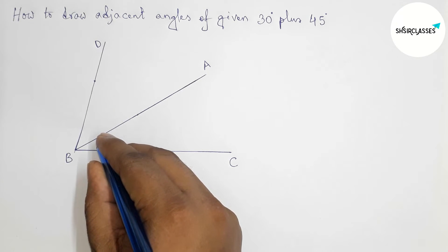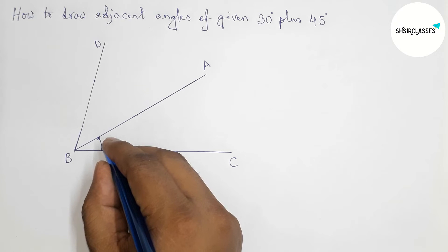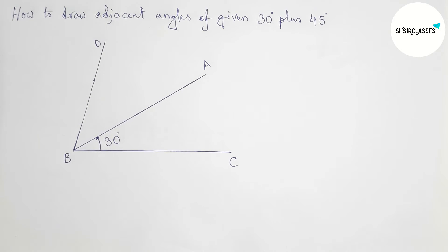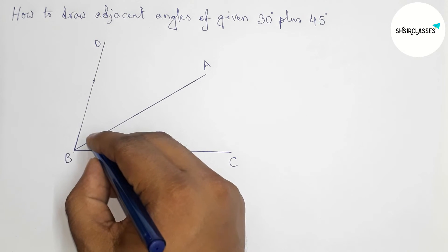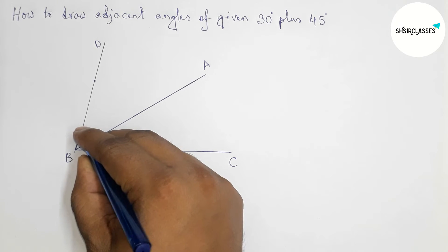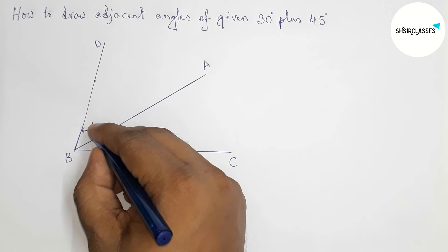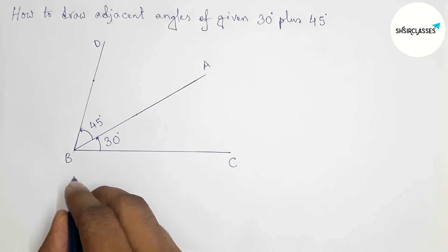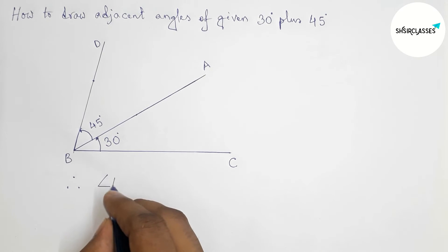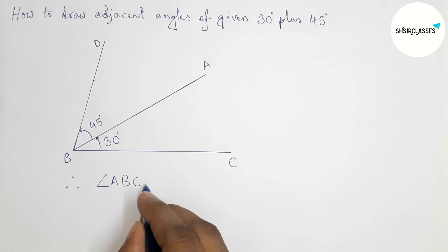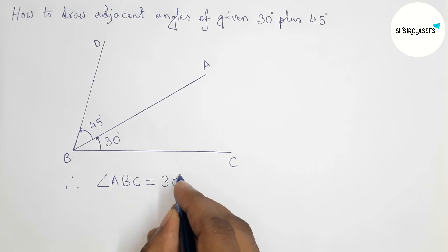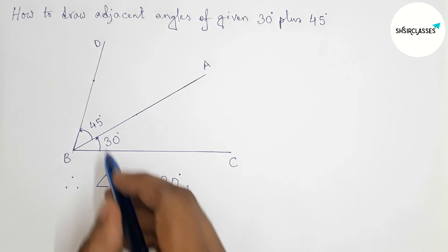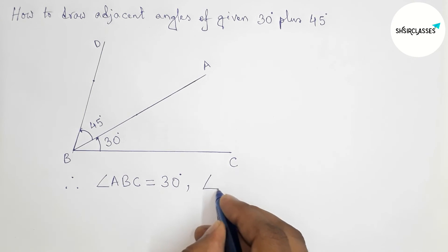Now here angle ABC, so angle ABC, this is equal to 30 degrees. Angle DBA, so angle DBA, this is 45 degrees. Therefore, angle ABC equals 30 degrees, and angle DBA equals 45 degrees.